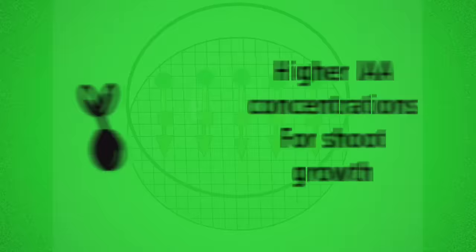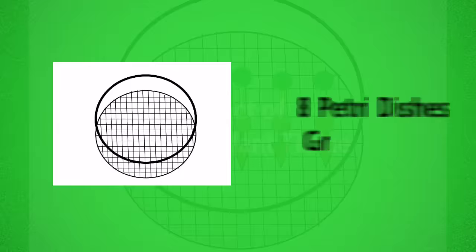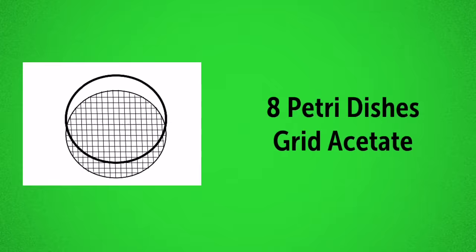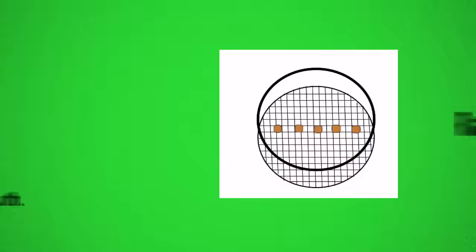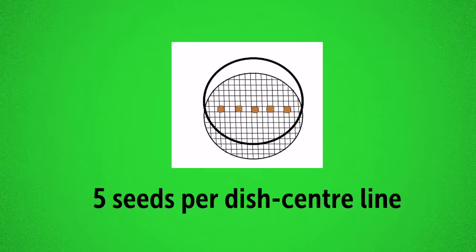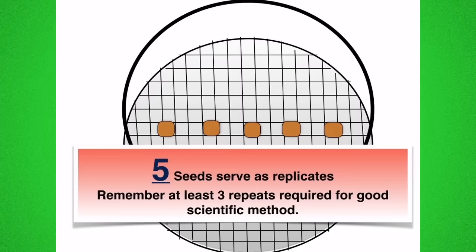So let's go through the practical now. We gathered eight petri dishes and into the base of each of these dishes we placed some grid acetate. Grid acetate will help you measure by how much the roots and shoots have grown. You'll simply be able to count the boxes. In our practical we used radish seeds. Into each of the eight prepared petri dishes we placed five radish seeds per dish along the centre line. All good experiments need your results to be replicated and that was the reason why we used five seeds per dish. They served as the replicates.